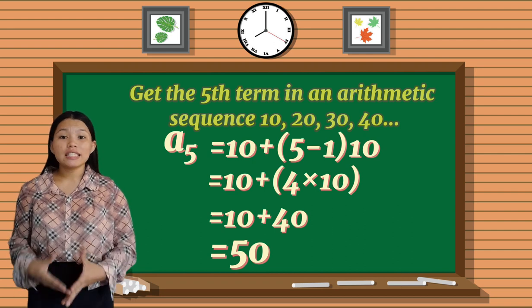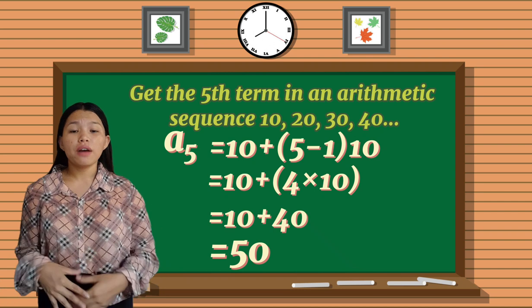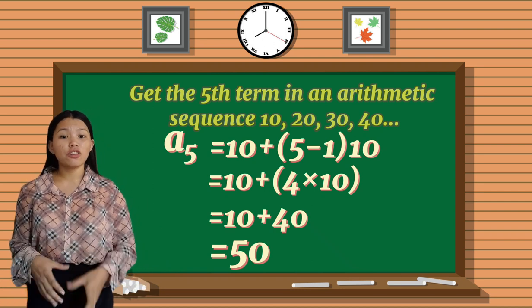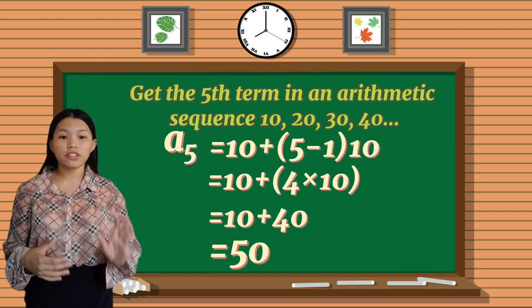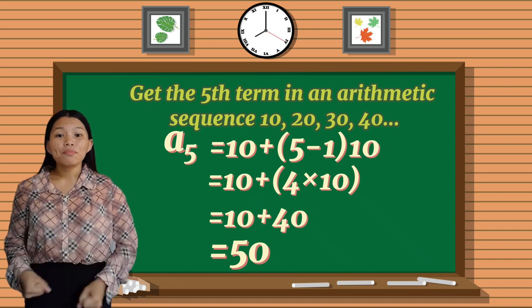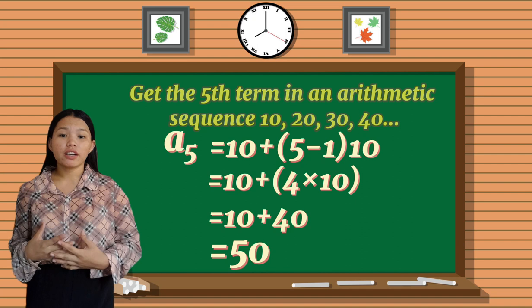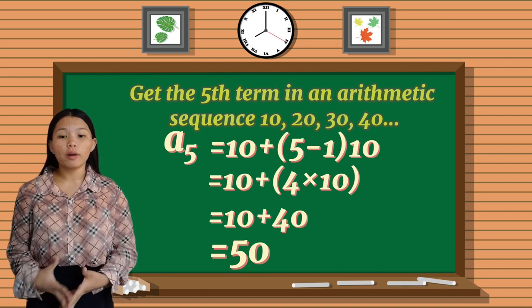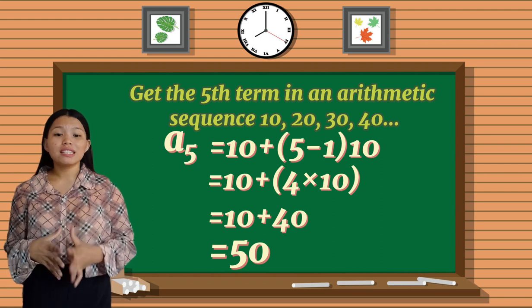So 50 is our 5th term. This formula gives you any term in a sequence. You can find the 5th term, the 7th term, the 100th term, and so forth. By the way, make sure you have a sheet of paper so you could write down this formula so that when we work on some practice problems, you know what to do.